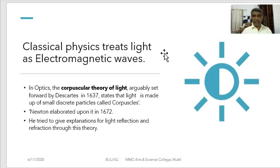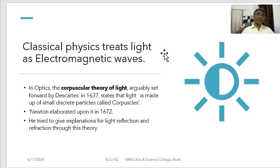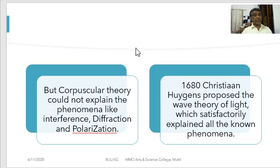Newton was able to explain reflection — the angle of incidence equals the angle of reflection, and the incident ray, reflected ray and normal are in the same plane. He explained these phenomena using the corpuscular theory of light. But later, corpuscular theory could not explain phenomena like interference, diffraction, and polarization.